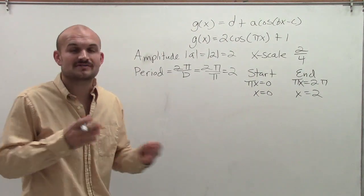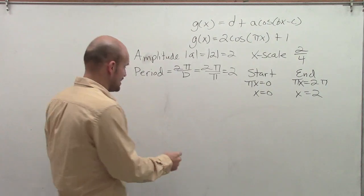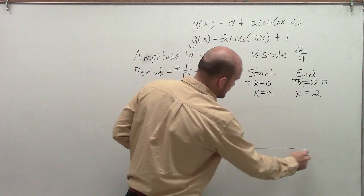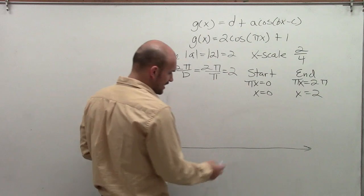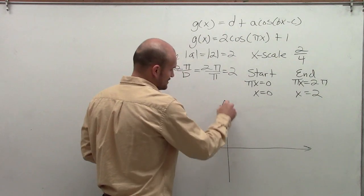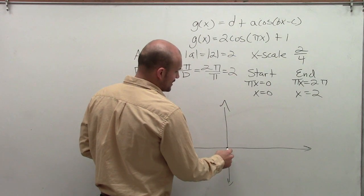Remember, our cosine graphs are cyclical. They're going to keep on repeating on and on forever. So what I'm going to do is now I'm going to create an x-axis. And I'm going to create my y-axis at 0, which is also going to be my starting position.